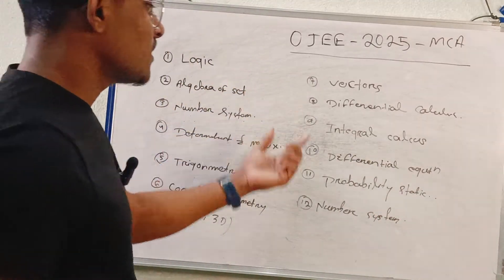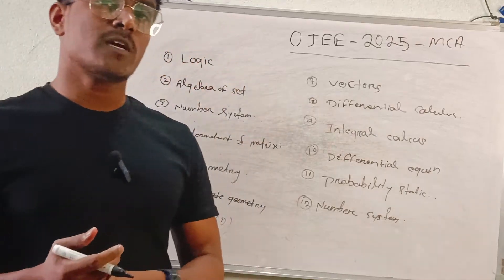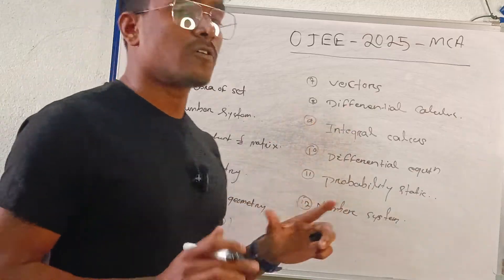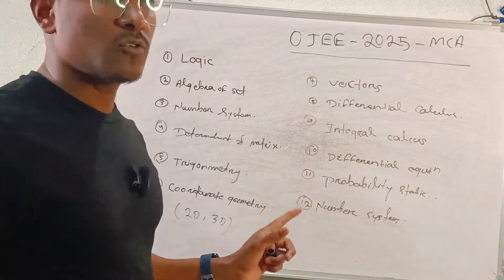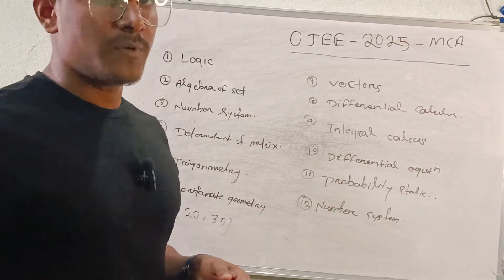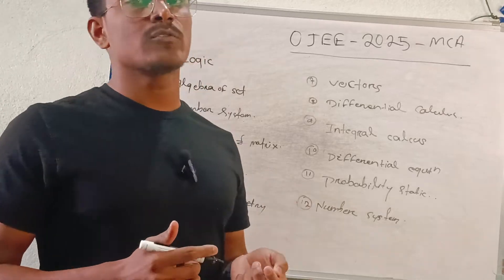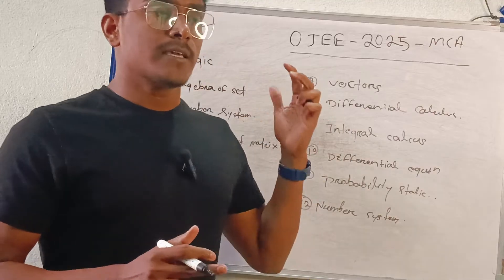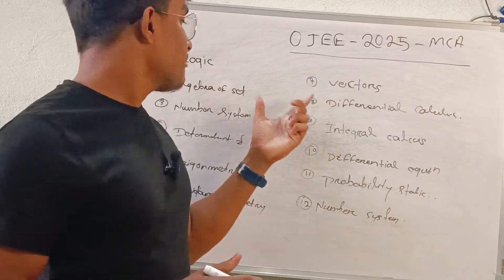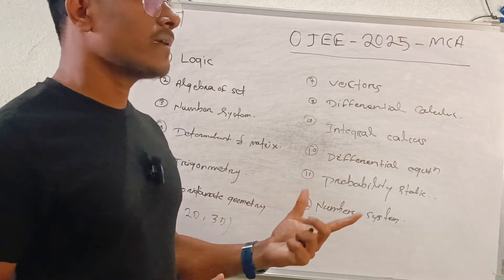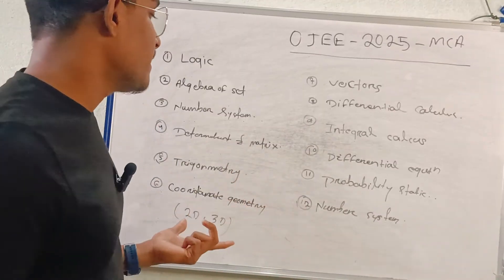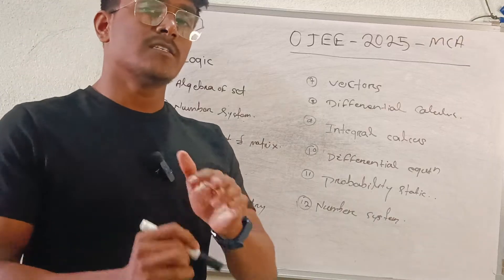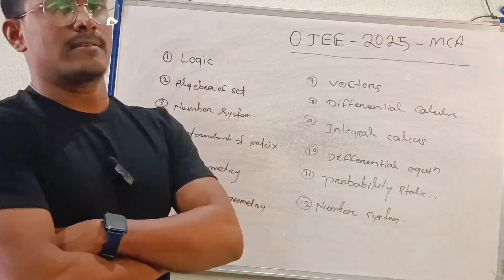So there are total 12 chapters in mathematics. Some are very important topics, relevant topics. Logic builds — and how much you can solve. There are many chapters and a lot of time-taking calculations. In MCA, you have to worry about accuracy, rank, and marks.